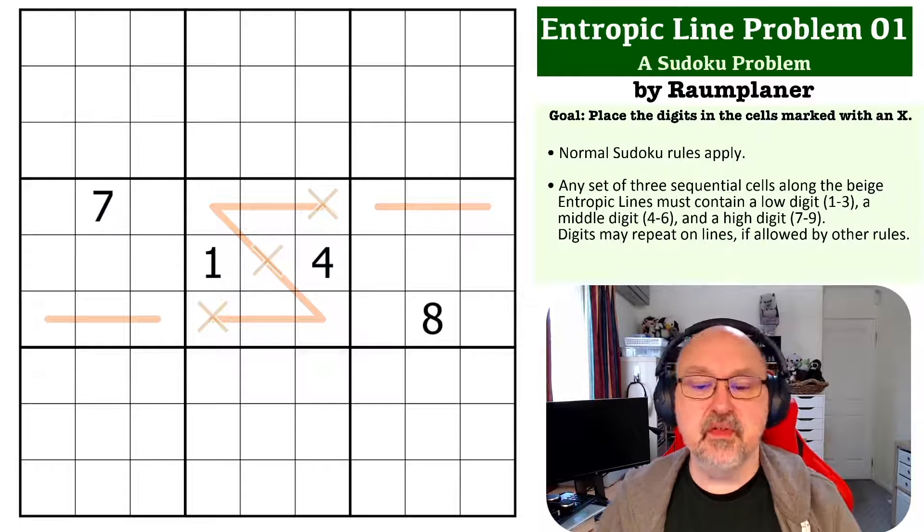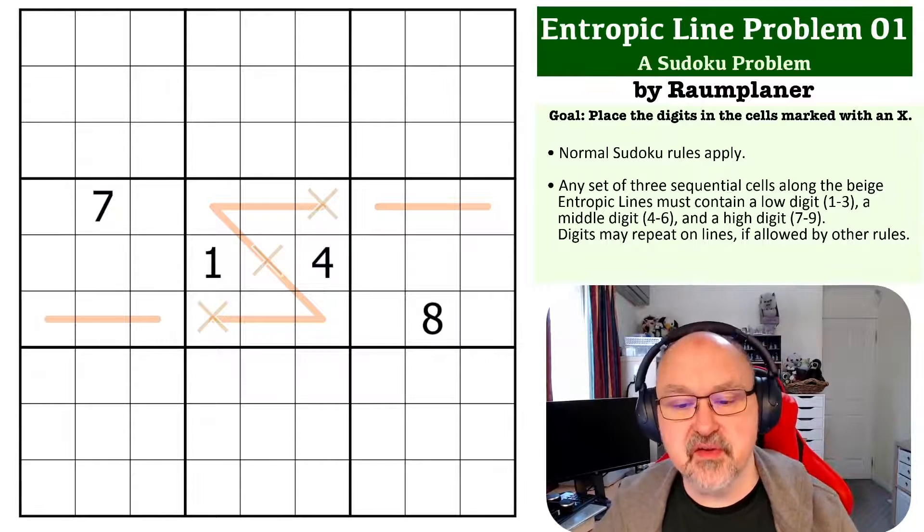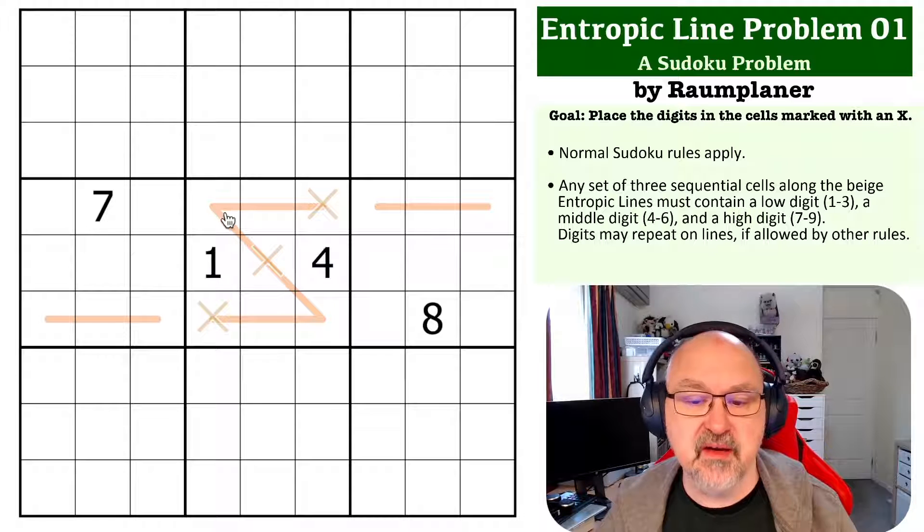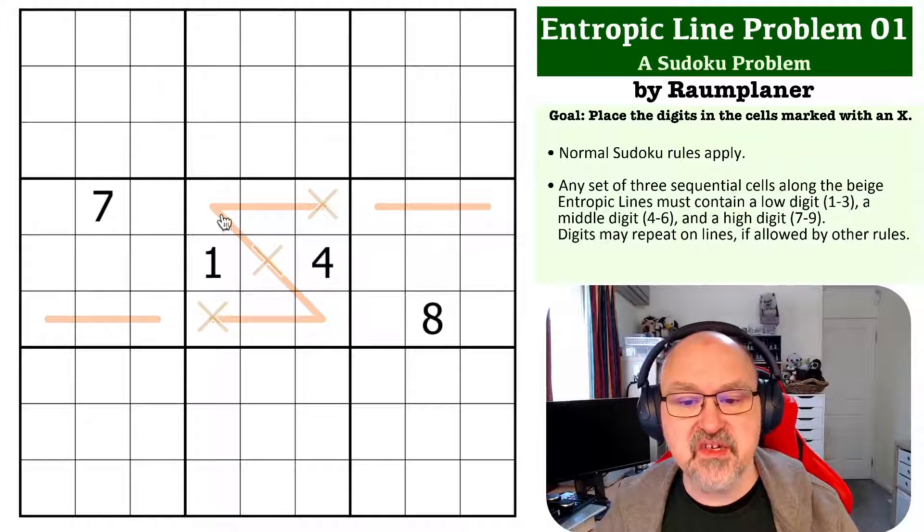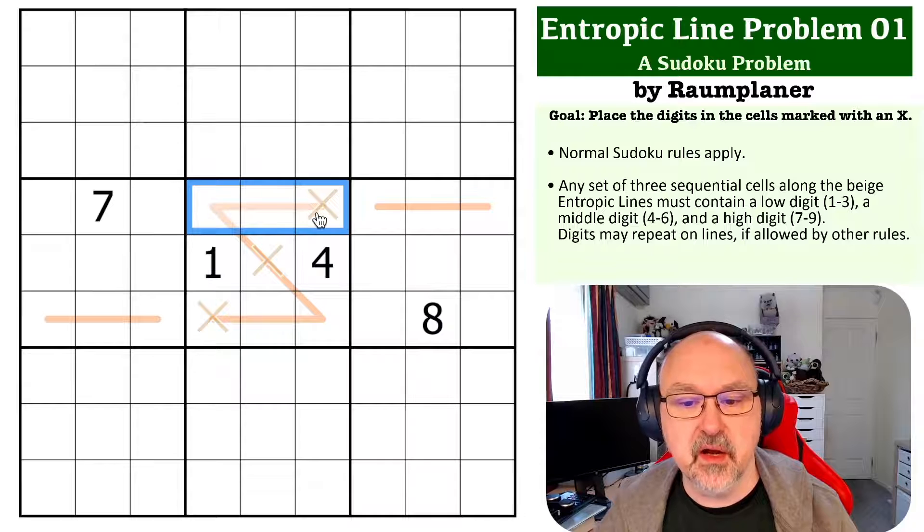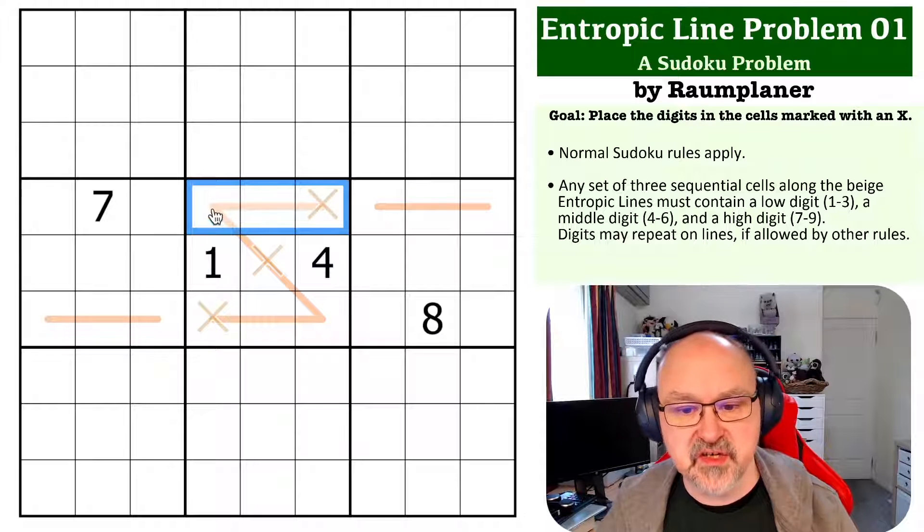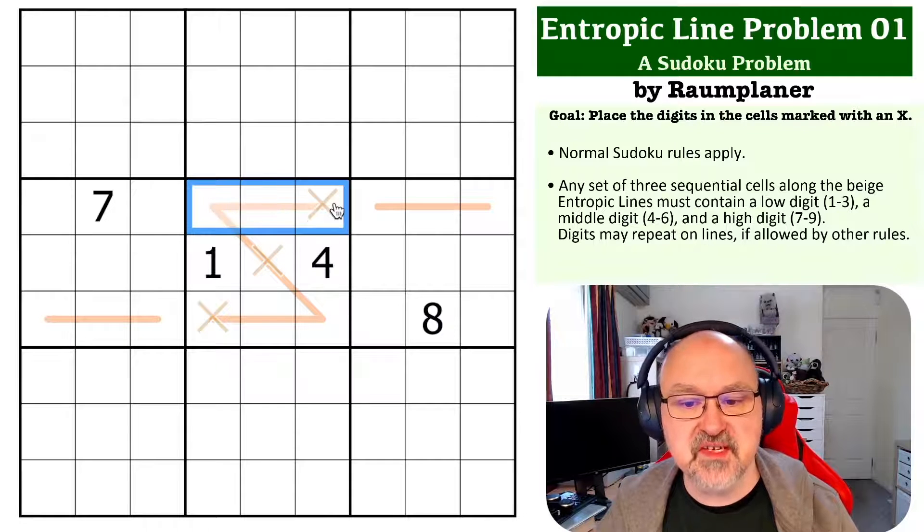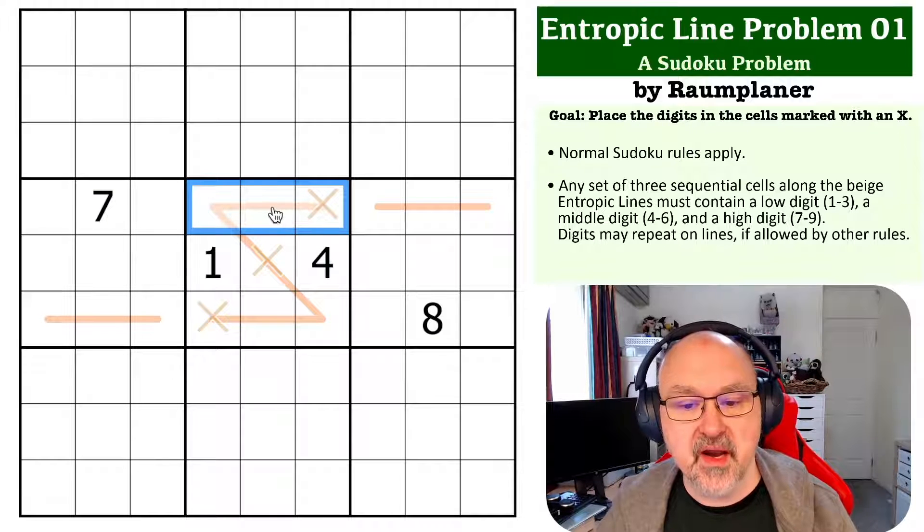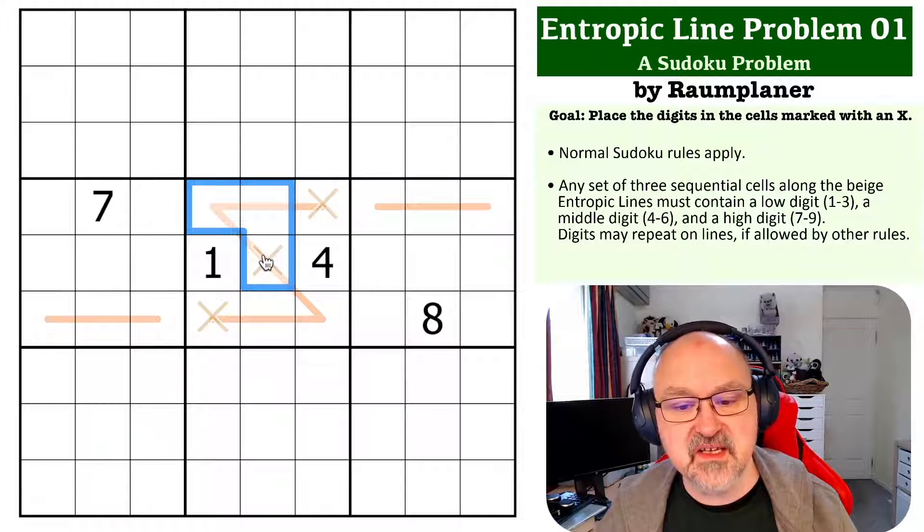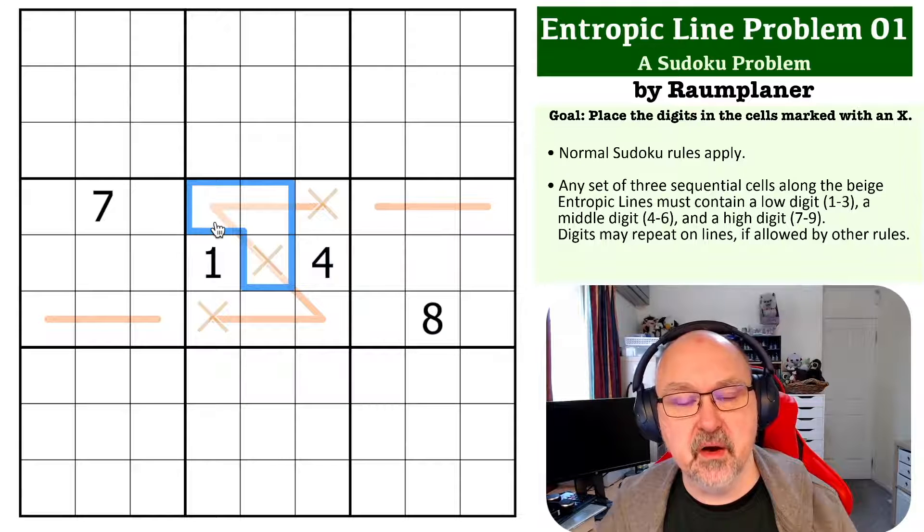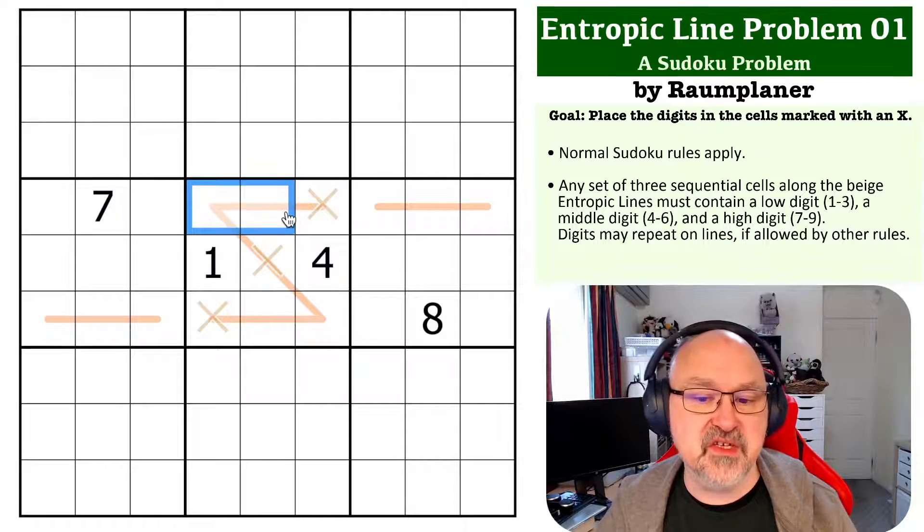Okay, so this is all based around the concept that because along an entropic line, each set of three cells must contain a low, a middle, and a high digit. If I was to select this set of cells, there will be a low, a middle, and a high. And if I was to select this set of cells, there will be a low, middle, and a high. And whichever these two are, the one on either side of them...